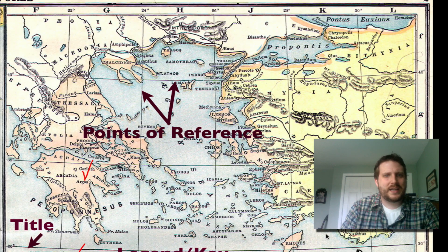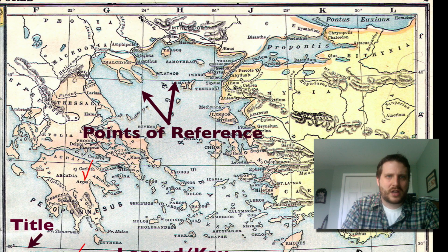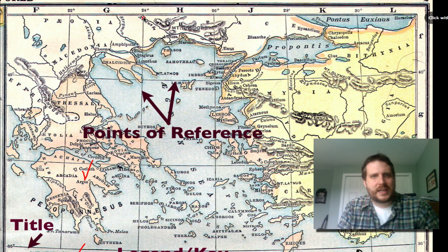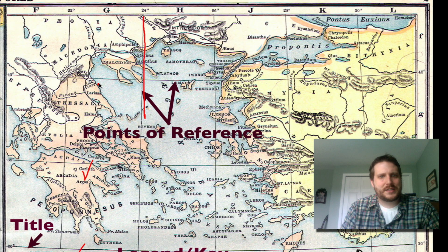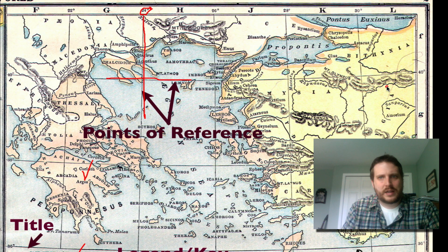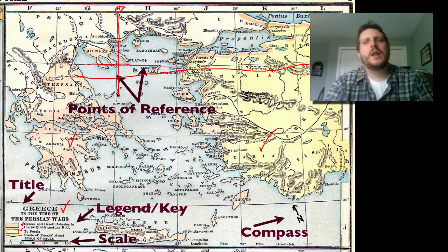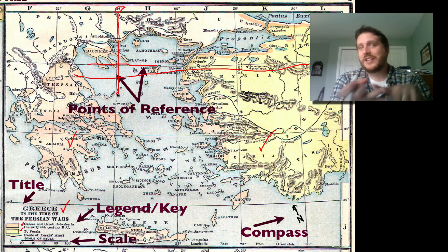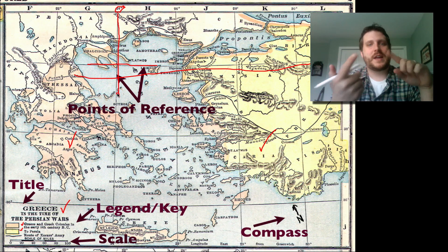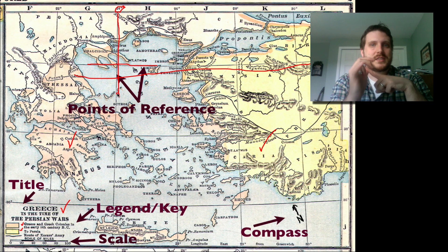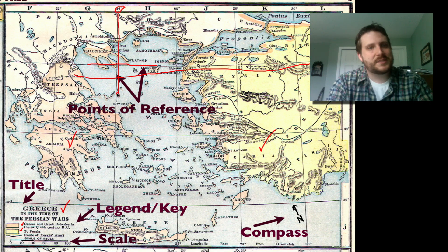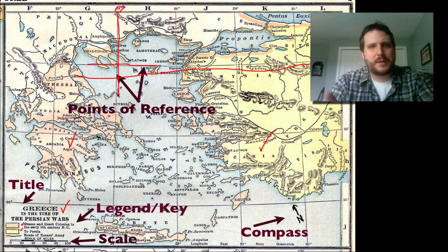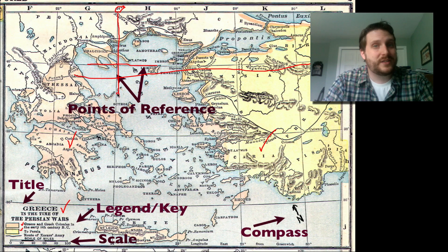The last thing most maps have in common are points of reference, which tell you where in the world you are looking. Usually they use latitude and longitude — these lines here with numbers on the side of the map. We'll look at latitude and longitude in more detail later. So the five things most maps have in common are: a title, a legend or key, a scale, a compass, and points of reference. Once you've looked at all those things, you can start examining the map and understanding the relationships it's showing you.